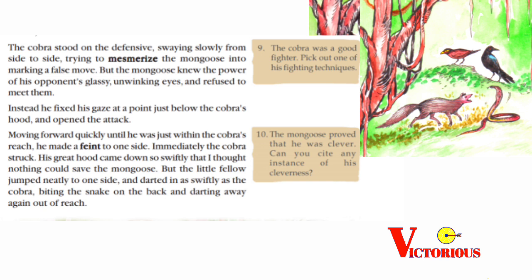The cobra stood on the defensive, swaying slowly from side to side, trying to mesmerize the mongoose into making a false move. But the mongoose knew the power of his opponent's glassy unwinking eyes and refused to meet them. Instead he fixed his gaze at a point just below the cobra's hood and opened the attack.